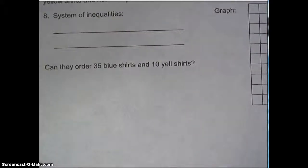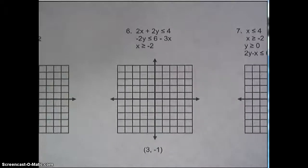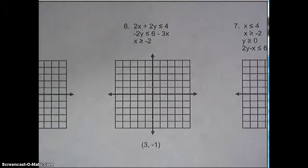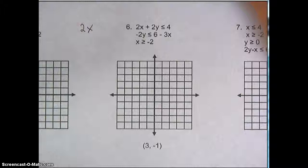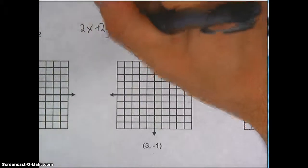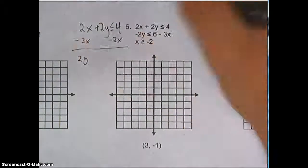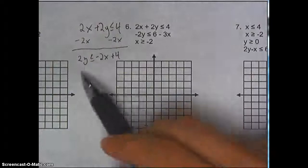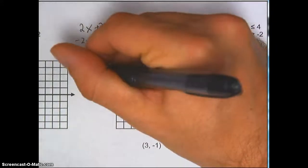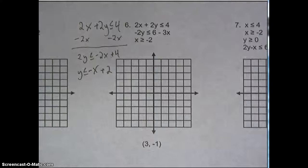So that's two equations. Let's see if we can do one with three equations now — let's do number six. Now we've got two equations that are not in y equals form, so I'm going to have to solve both into slope-intercept form. I've got 2x plus 2y is less than or equal to 4. Subtract 2x to get 2y is less than or equal to negative 2x plus 4. Divide by 2 to get y is less than or equal to negative x plus 2.